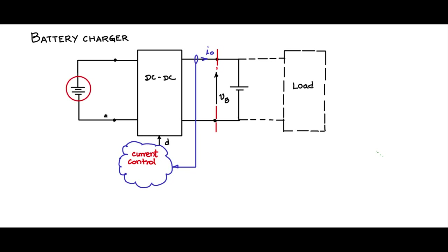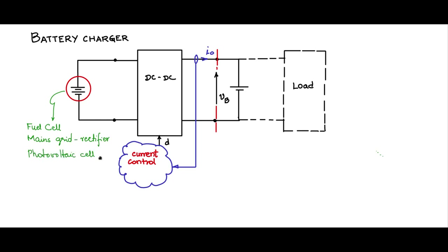That DC source could be a fuel cell, or it could be a mains grid followed by a rectifier, or it could be photovoltaic cells — very popular — photovoltaic cells charging the battery, or a wind or hydro system connected to an alternator or a generator, followed by a rectifier, which is used for charging the battery. There are very many sources which can be used as the input source to charge the battery.